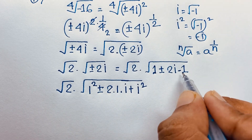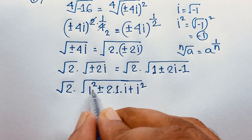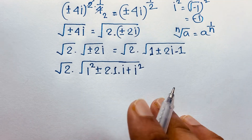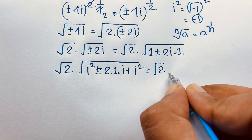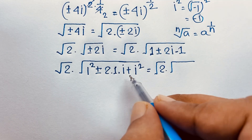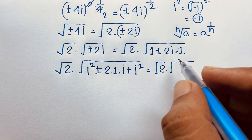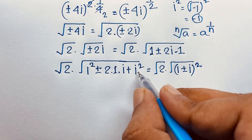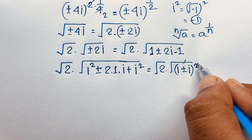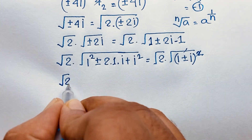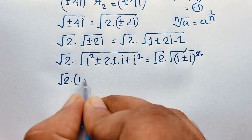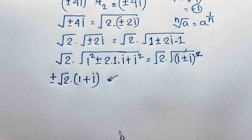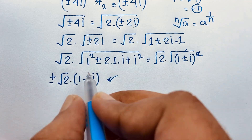We know that i squared equals negative 1. So applying the identity a squared plus or minus 2ab plus b squared equals a plus or minus b, whole squared. Here b is i. The square root cancels, and it will be square root 2 times 1 plus i, and plus or minus. This is our final answer in this math problem.